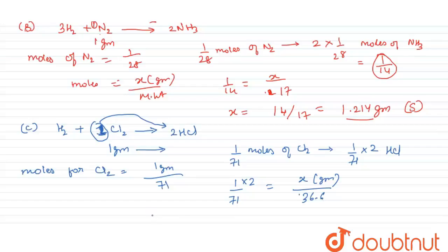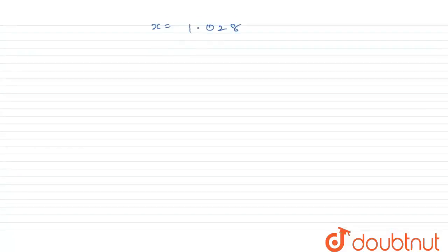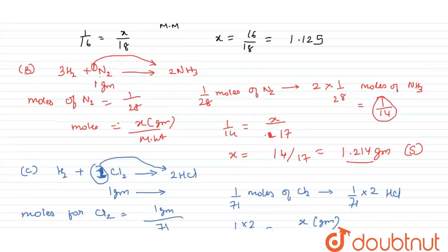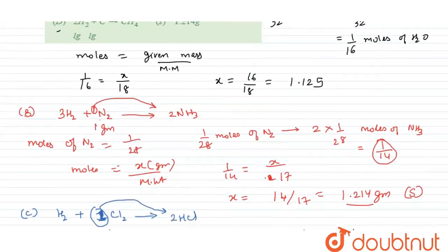By solving this, the value of X comes out to be 1.028. And now similarly option D will be solved. Option D says 2 moles of H2 reacts with C to give CH4.